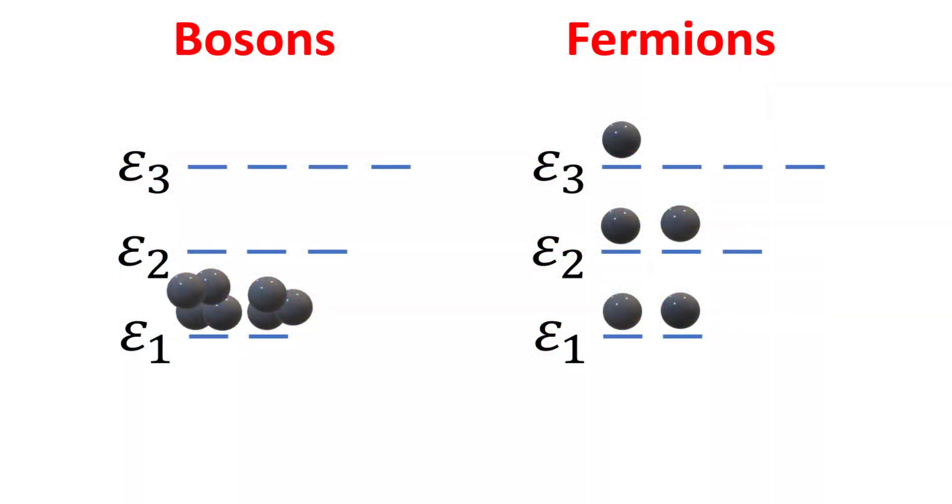Due to the symmetric two-particle nature of its wavefunctions, bosons do not obey the Pauli exclusion principle like fermions whose two-particle wavefunctions are antisymmetric. In other words, a quantum state can accommodate more than one boson. On the other hand, for fermions you can only have at most one fermion for each quantum state.